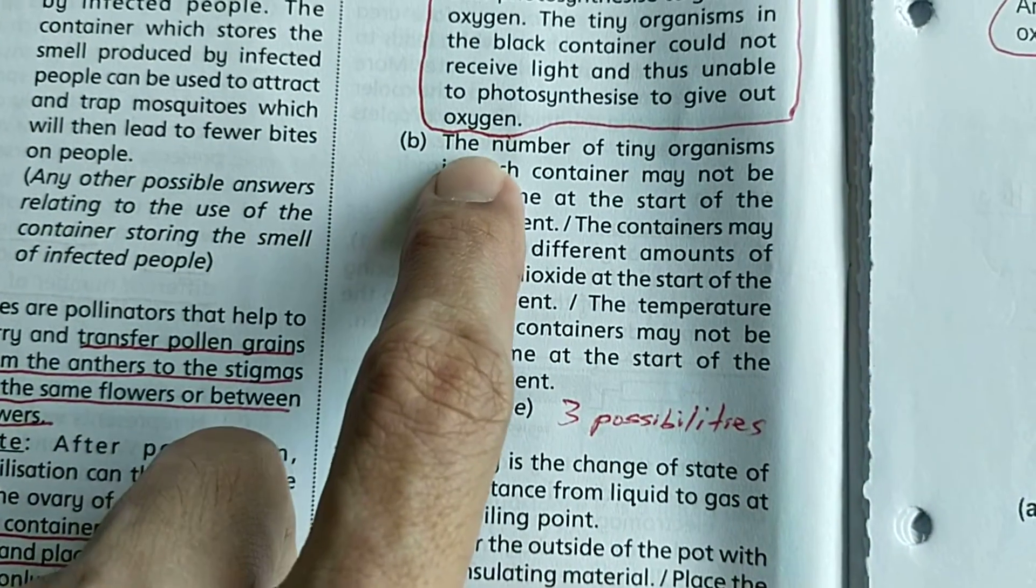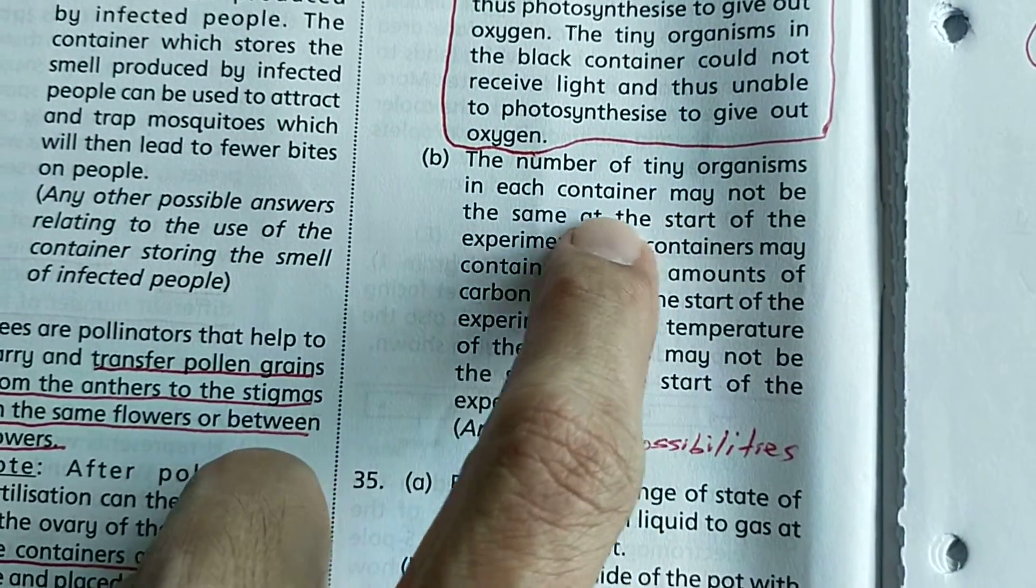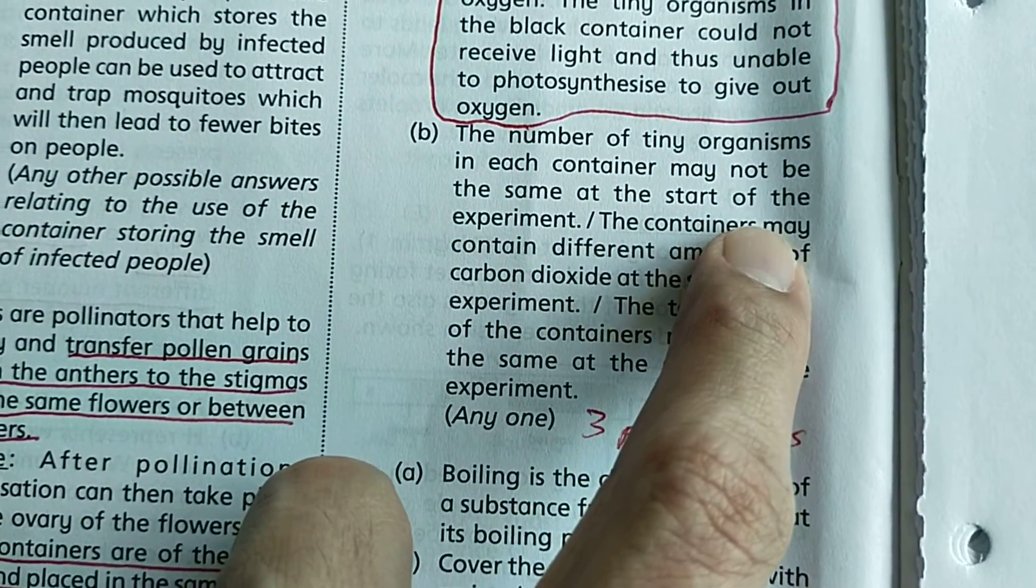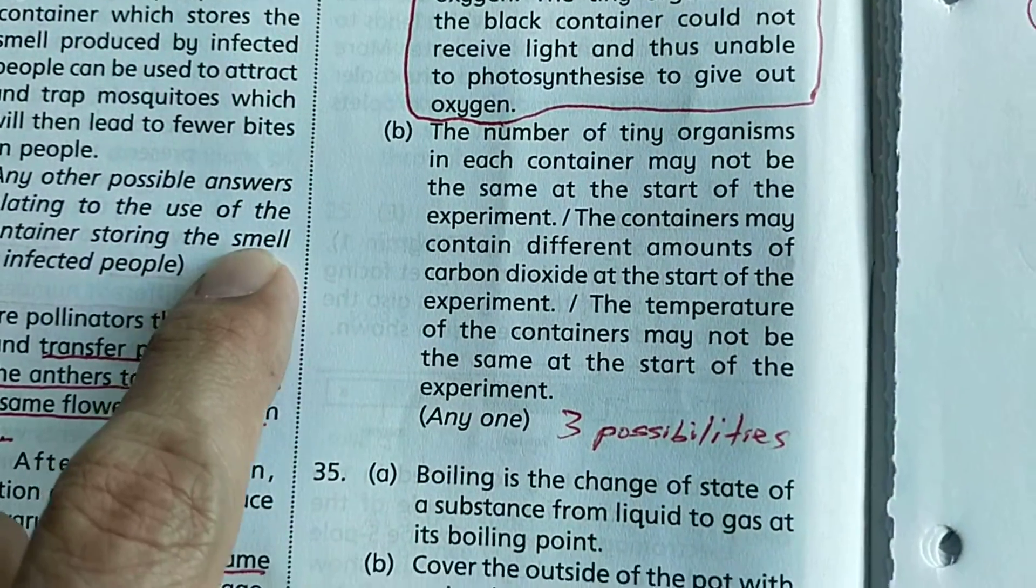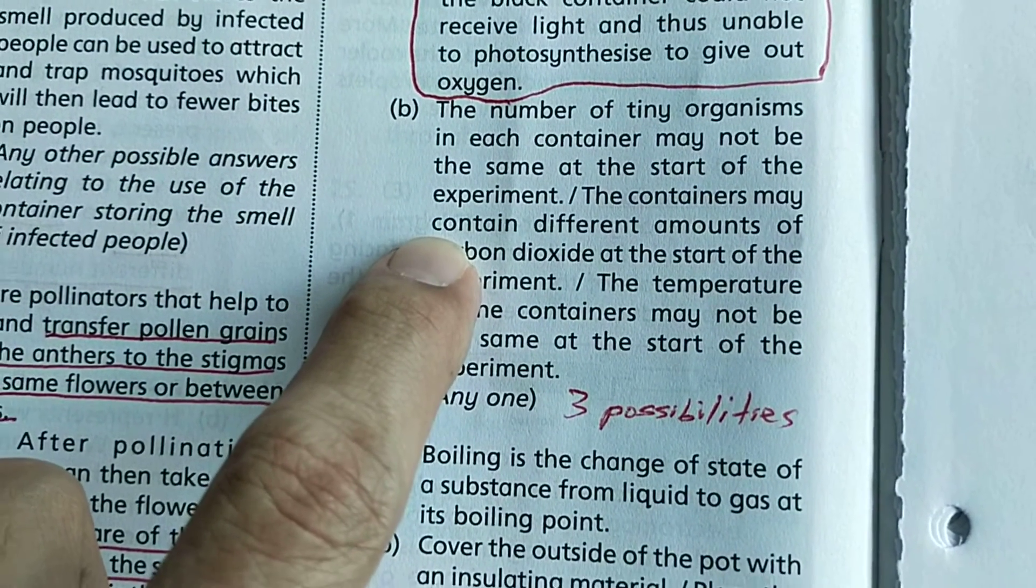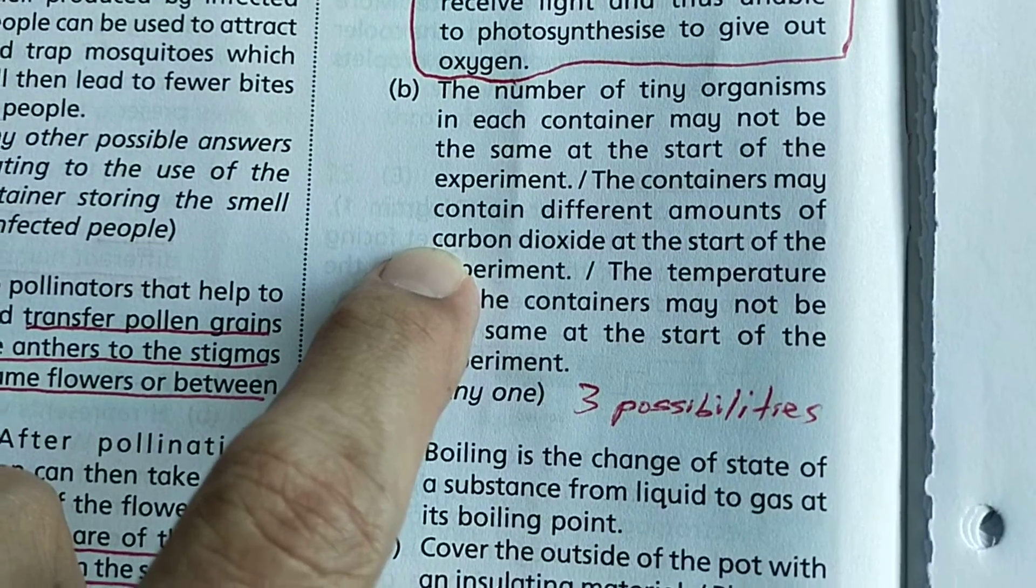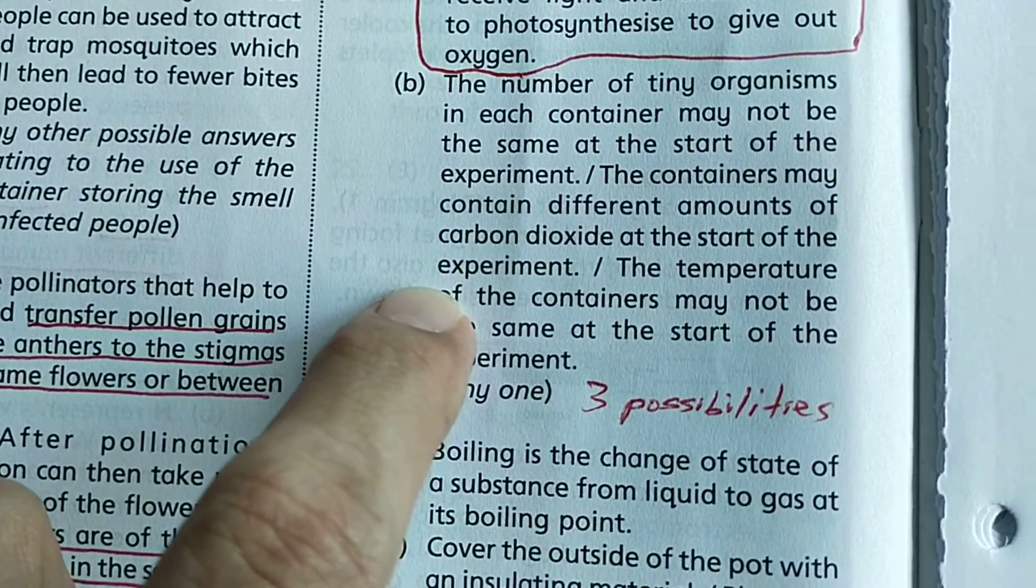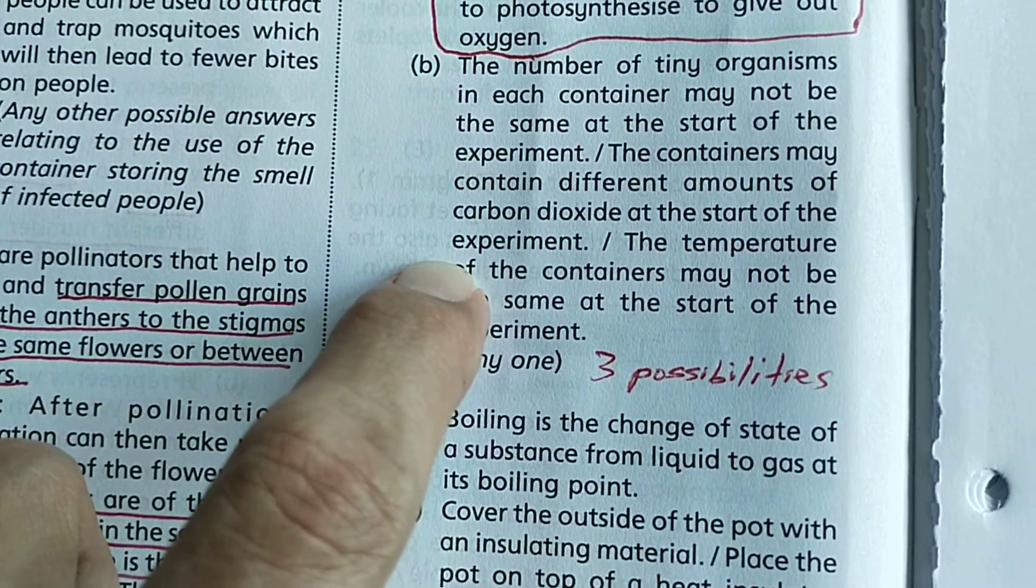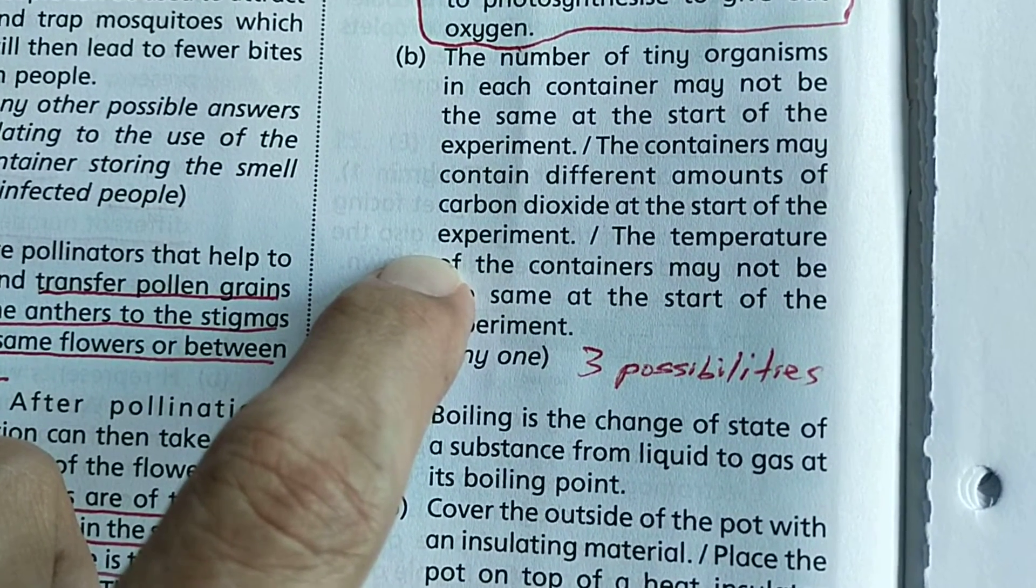Number one, the number of tiny organisms in each container may not be the same at the start of the experiment, that's one possibility. Secondly, the containers may contain different amounts of carbon dioxide at the start of the experiment.